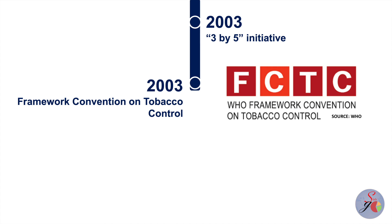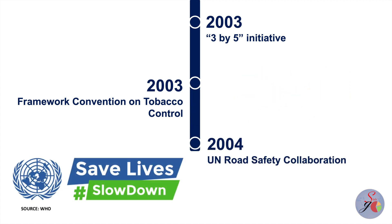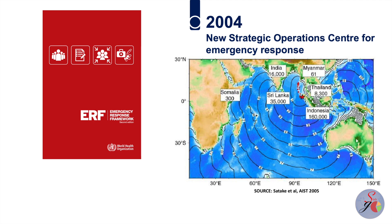In the same year, the World Health Assembly unanimously adopted WHO's first global public health treaty — the WHO Framework Convention on Tobacco Control — aiming to reduce tobacco-related deaths and diseases worldwide. The UN Road Safety Collaboration was established in 2004, and WHO and the World Bank launched the first-ever World Report on Road Traffic Injury Prevention. In 2004, WHO's Strategic Health Operations Centre was used for the first time to coordinate emergency response support following the Indian Ocean tsunami.